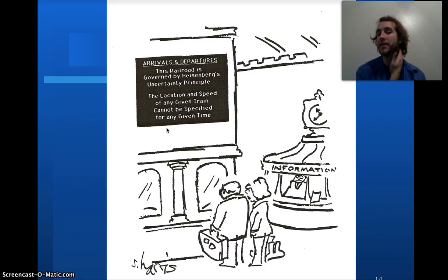And I love this little comic here, this particular railroad is governed by the Heisenberg uncertainty principle. We cannot tell you the location and the speed of a train at the same time. We can tell you how fast it's going, but not where it is. Or we can tell you, Heisenberg's, because it'd be one lousy railroad company.